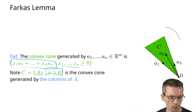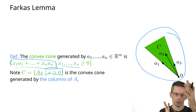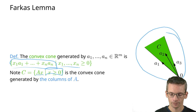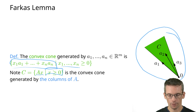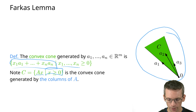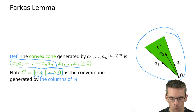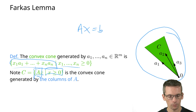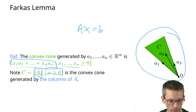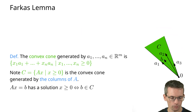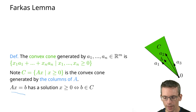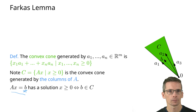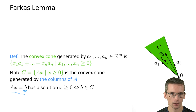So in 2D, this would look like this here. In 3D, you can also imagine how such a cone would look like. It's a cone generated by the columns of A. Now, Ax equals b has a solution if and only if b lives inside of this cone — that is, b is in C, assuming x greater than or equal to 0.